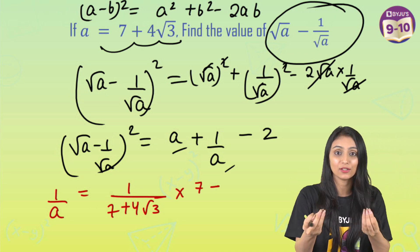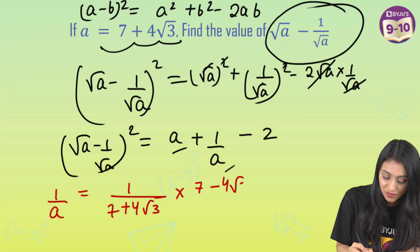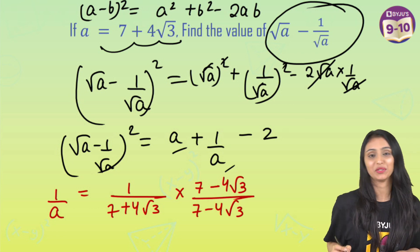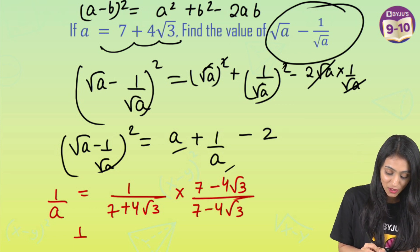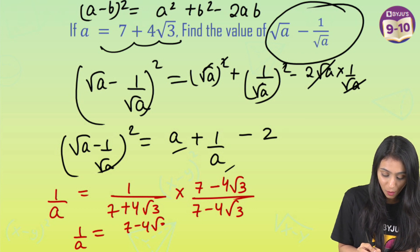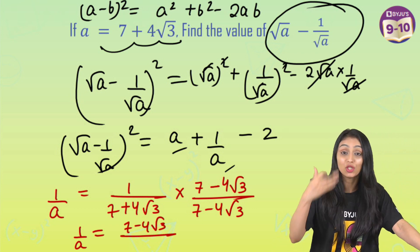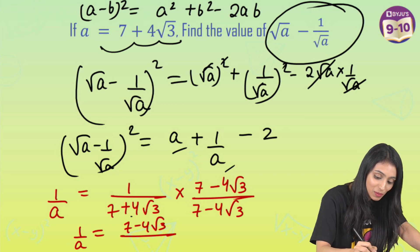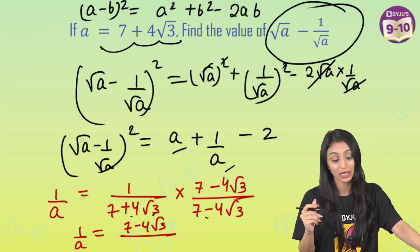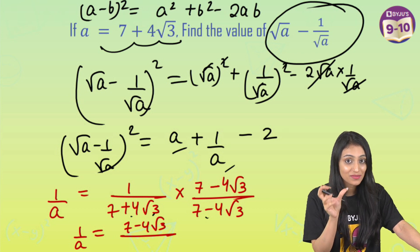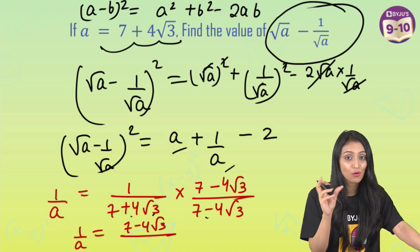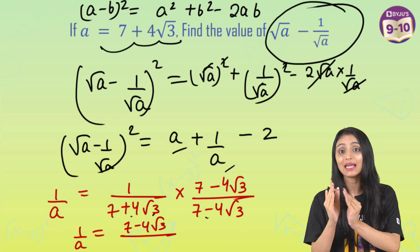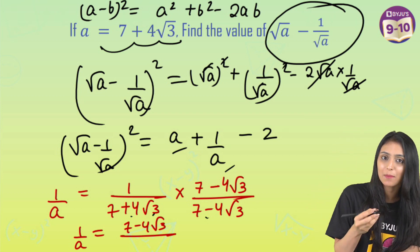Whenever there is a square root in the denominator, we have to rationalize. For rationalizing, we simply change the sign: since there is a positive sign in the denominator, I'll use the negative sign and multiply by 7 minus 4 root 3 over 7 minus 4 root 3. The denominator becomes 7 plus 4 root 3 times 7 minus 4 root 3, which is of the form (a+b)(a−b).